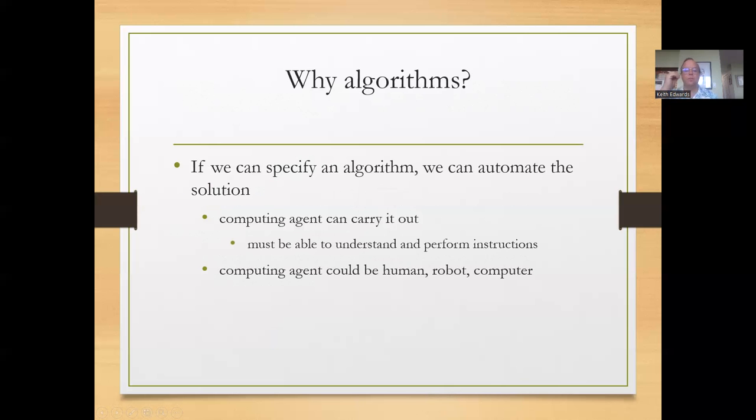And if we can specify an algorithm, then we can automate the solution to that. And that's good because we can get someone else or something else to do it. So we call that someone or something else, a computing agent. And as long as the computing agent is able to understand and perform the instructions, they can carry out the task if we can make an algorithm for it.